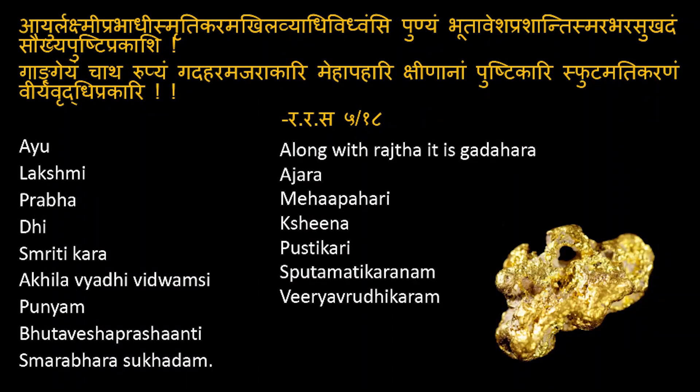From Rasaratna Samuchaya 5th chapter again, he speaks about Ayur Lakshmi Prabhadhi Smriti Kara, Akhilavvyadhi Vidvamsi, Punyam Bhutavesha Prashanti, Smarabharasukham, Saukyam Pushti Prakashi, Gadahara Ajaramarakari, Meha Pahari, Kshinanam Pushti Kari, Sputamatikaram, and Virya Vriddhi Prakari. It has a wide spectrum impact on multiple Shrotasas — Manova Shrotas, Krimi or Bhutavesha meaning organisms, and Kshinata. It makes the body Gadahara, meaning without diseases.